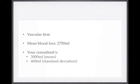Our example today doesn't involve beer. Suppose you're working on a vascular firm and your consultant has heard that the average estimated blood loss for an open emergency abdominal aortic aneurysm repair is 2750 millilitres. She's interested to know how her results compare and has collected estimated blood loss for the last nine emergency triple-A repairs, finding a mean of 3000 millilitres and a standard deviation of 100. She has asked you to do the numbers.